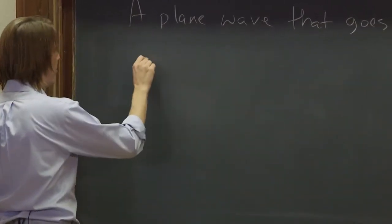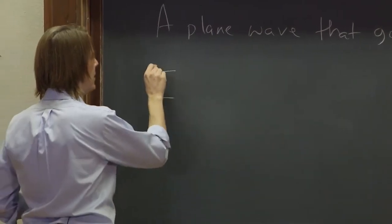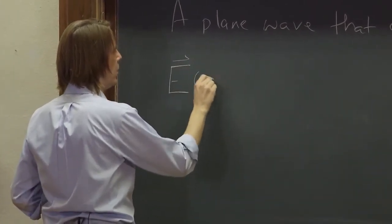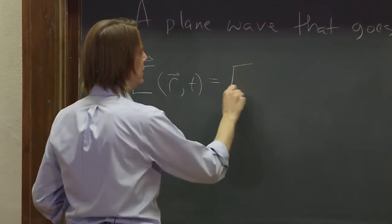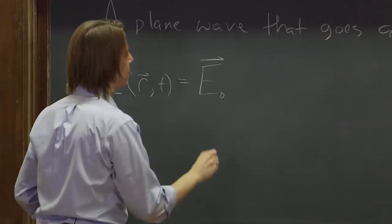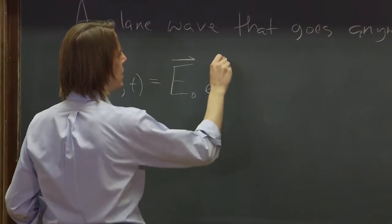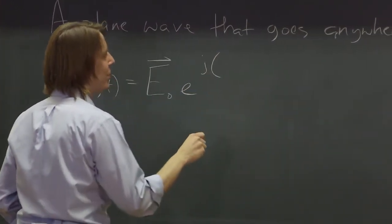This is the grown-up way to write a plane wave. The e-field at all positions and at all times is e-naught, and that's a vector, e to the j, and we'll use our complex notation, and then in here we have k dot r minus omega t.